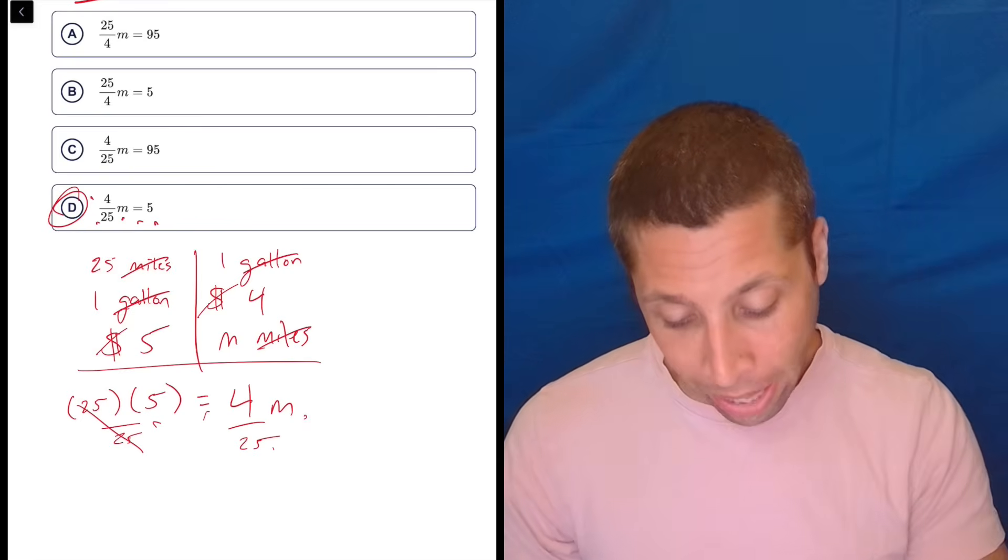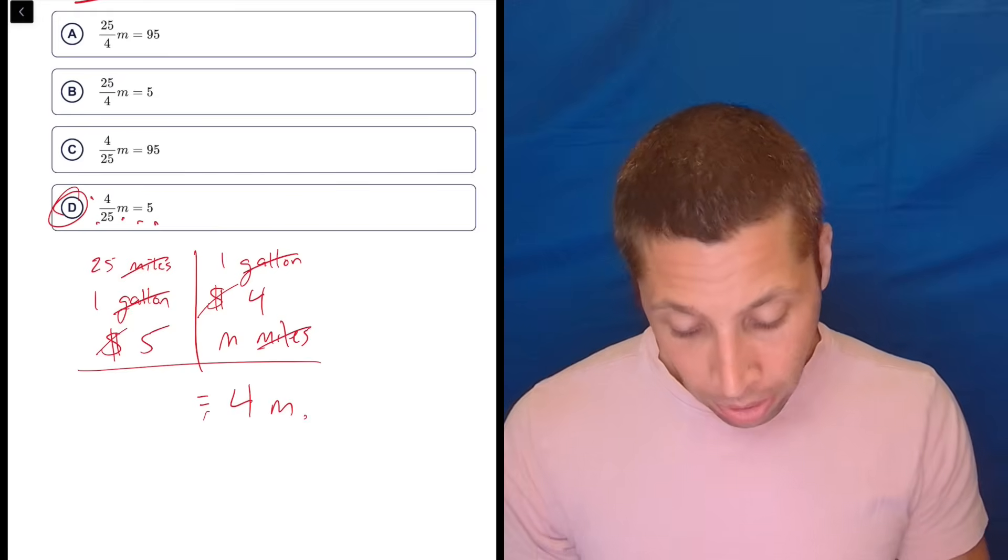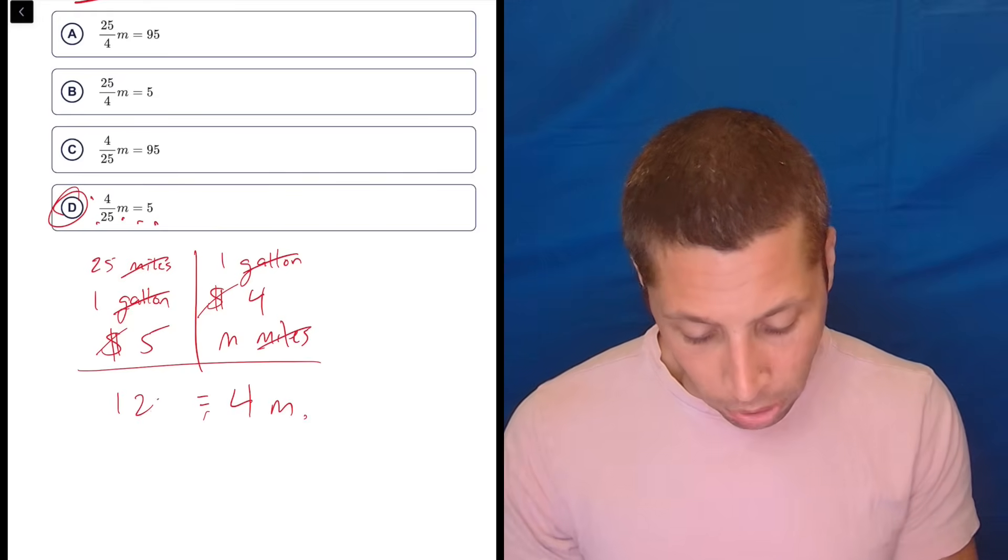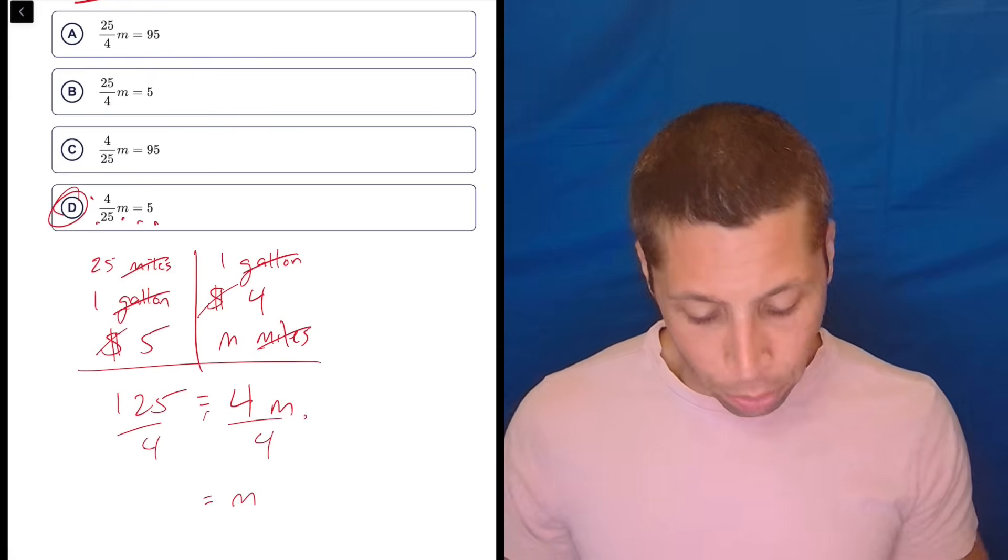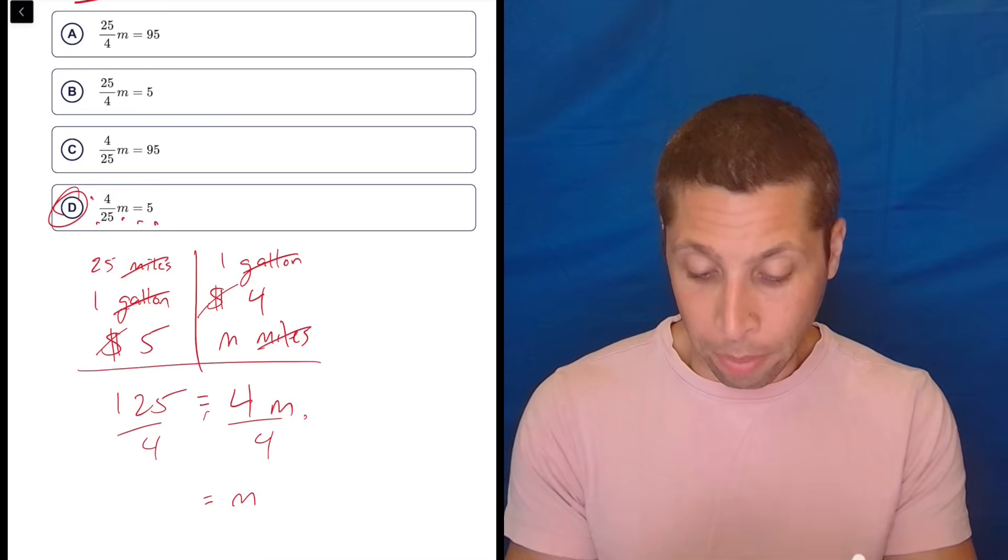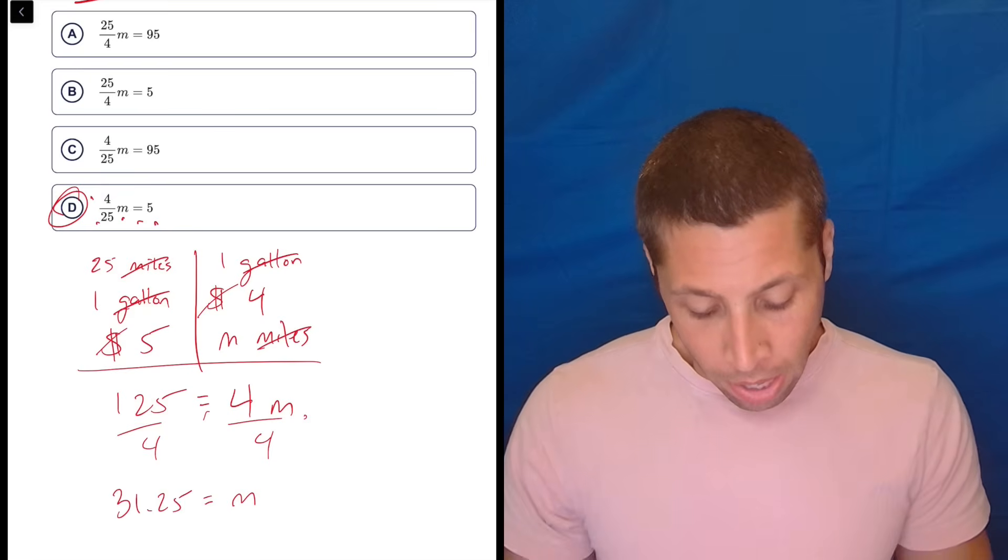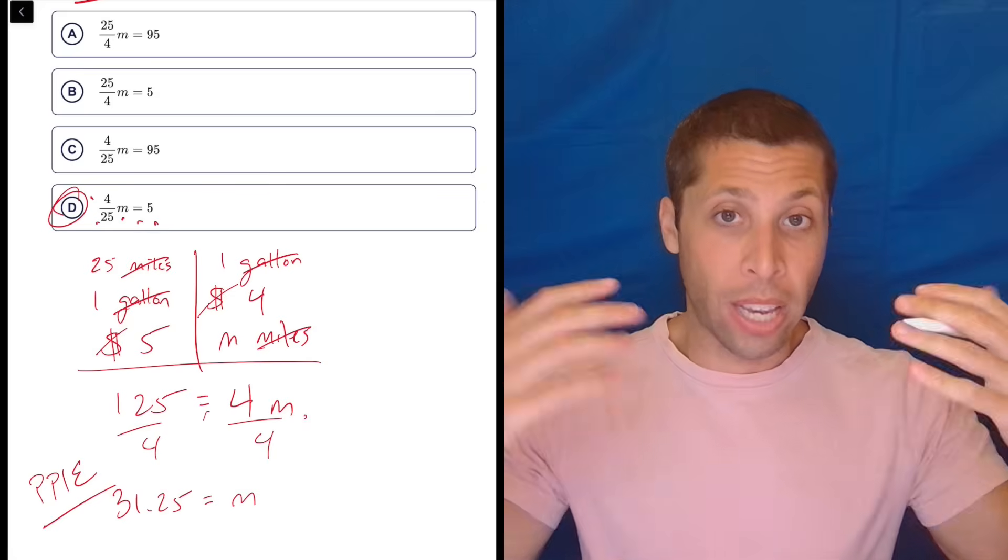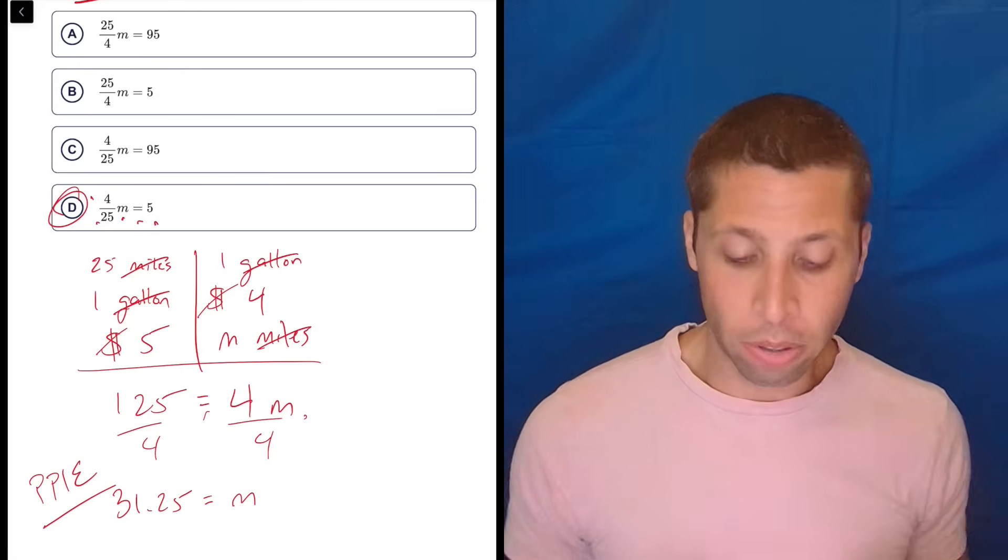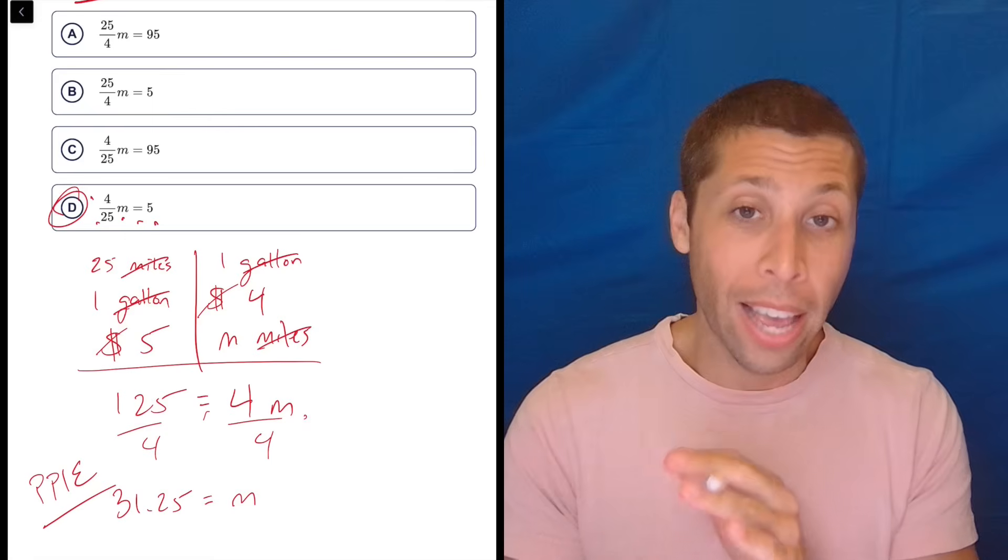But out of habit, you might. So let's divide by 4 to actually get a value of M. So 125 divided by 4 is 31.25. And now this becomes a little bit of a plug points into equations question. We can just take that value of M, put it into all these equations, and see which one fits with that point. And again, it'll be D.